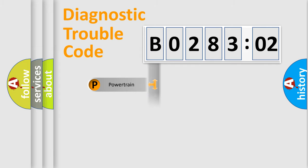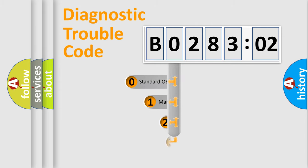Powertrain, body, chassis, network. This distribution is defined in the first character code.